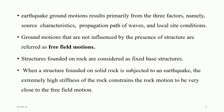Earthquake ground motion results primarily from three factors: soil characteristics, propagation path of waves, and local site conditions. Ground motions that are not influenced by the presence of a structure are referred to as free field motions. Structures founded on rock are considered as fixed-base structures. When a structure founded on solid rock is subjected to an earthquake, the extremely high stiffness of the rock constrains the rock motion to be very close to the free field motion.